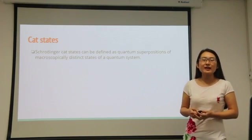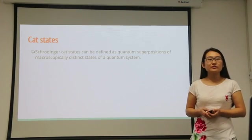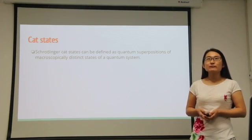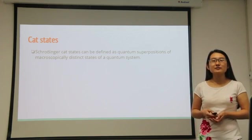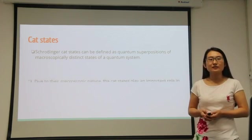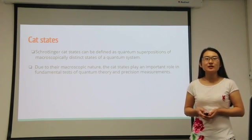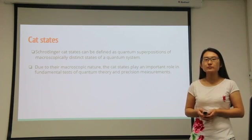Cat states can be defined as a quantum superposition of macroscopically distinct states of a quantum system. The definition is motivated from Schrodinger's cat experiment, where a cat can be in dead and alive state. Due to their macroscopic nature, the cat states play an important role in fundamental tests of quantum theory and precision measurement.